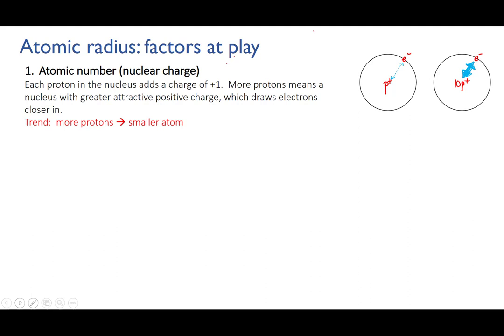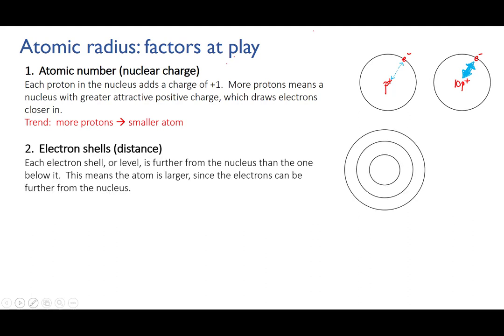The second factor is the electron levels. Each electron shell in the atom is further from the nucleus than the last, so the more electrons an atom has, and the more electron shells are occupied, the larger the atom will be.